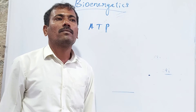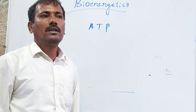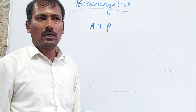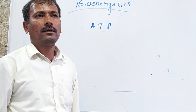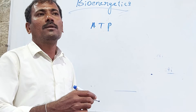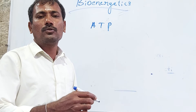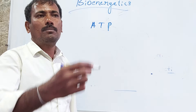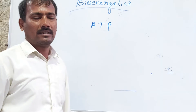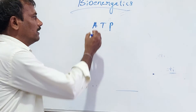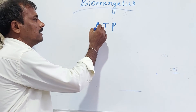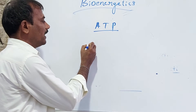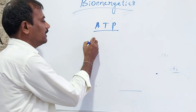Adenine is linked to the ribose sugar, and to this ribose sugar three phosphate molecules are attached — this is ATP.